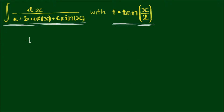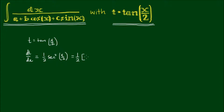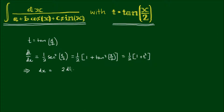If we let t = tan(x/2), then dt/dx is equal to one half of secant squared of x/2, which equals one half of (1 + tan²(x/2)). Since t = tan(x/2), this simplifies to one half of (1 + t²). Rearranging, we have dx = 2dt / (1 + t²).